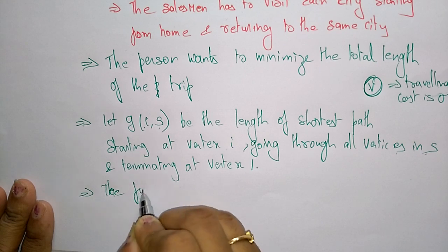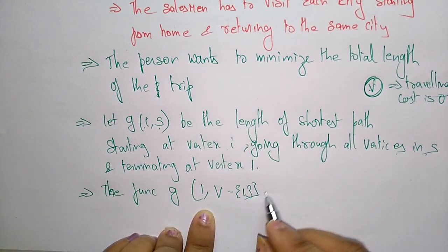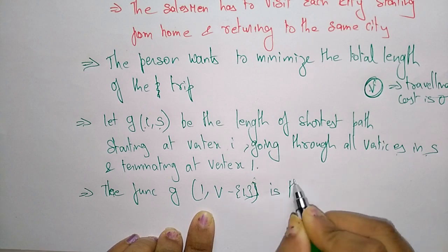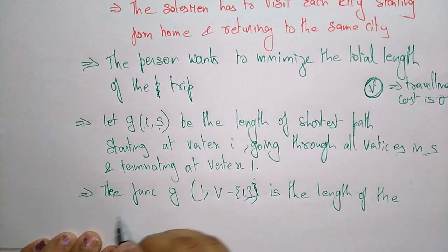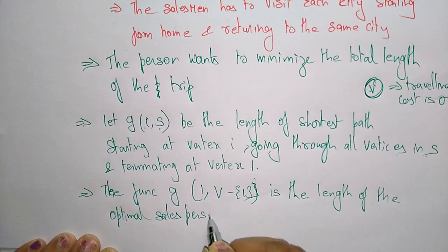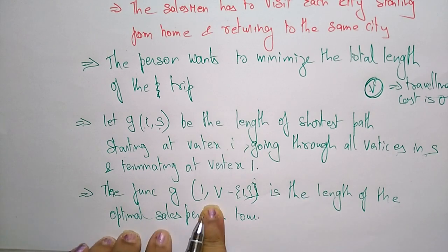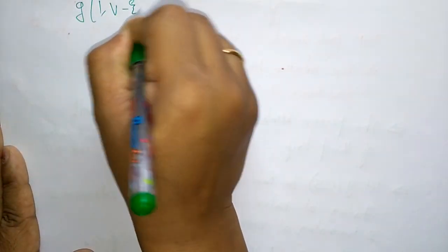The function G(1, V minus 1) represents the length of the optimal salesperson tour. From the principle of optimality we can find out the formula for calculating the shortest path using the Traveling Salesman Problem, which is G(1, V minus 1).